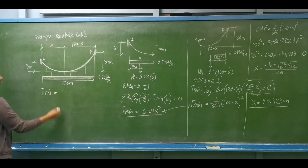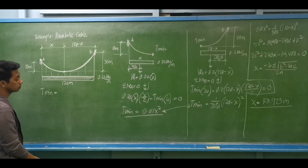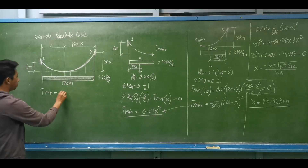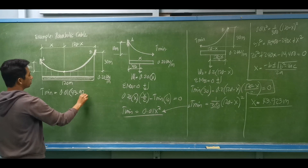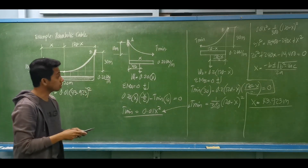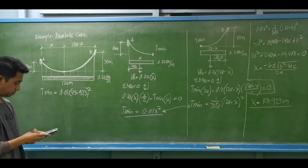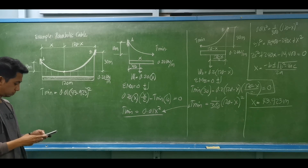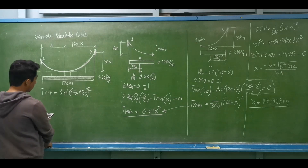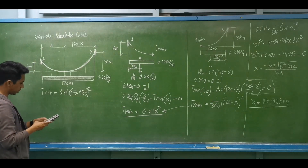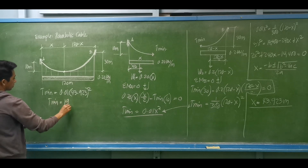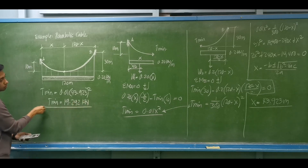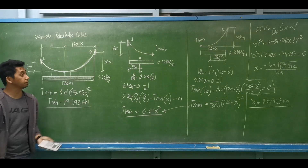Now we can compute the minimum tension. Using equation one: T-min equals 0.01 times x squared. With x equal to 43.923 meters, T-min equals 0.01 times 43.923 squared, which gives a minimum tension equal to 19.292 kilonewtons. This minimum tension acts at the lowest point of the cable.